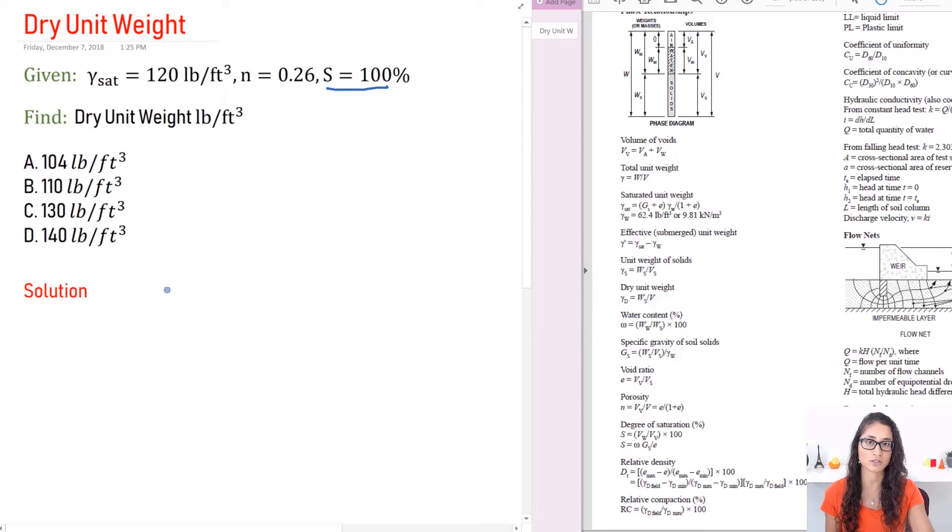Most of the variables are given to you. All you have to do is just plug in. But again you never know and that's why I wanted to share this with you guys. Okay so the first thing we're going to do is write the equation for the dry unit weight. So we have gamma dry is equal to the weight of the solid divided by the volume.